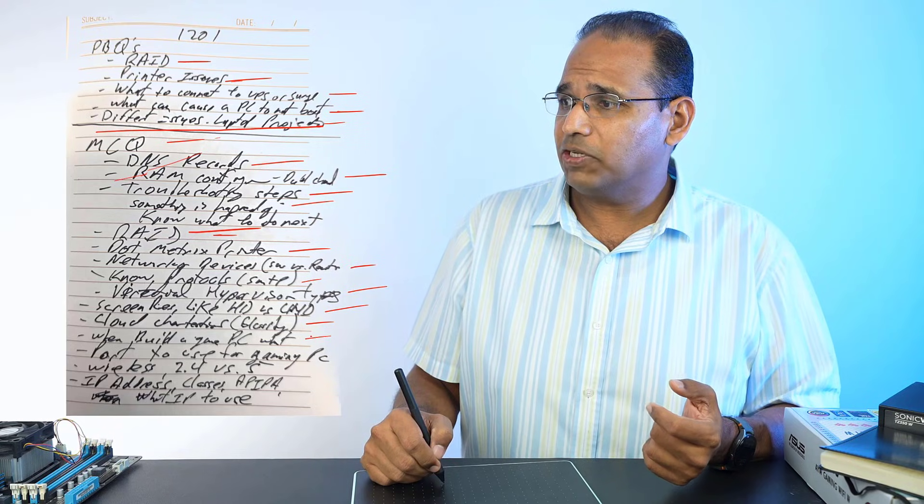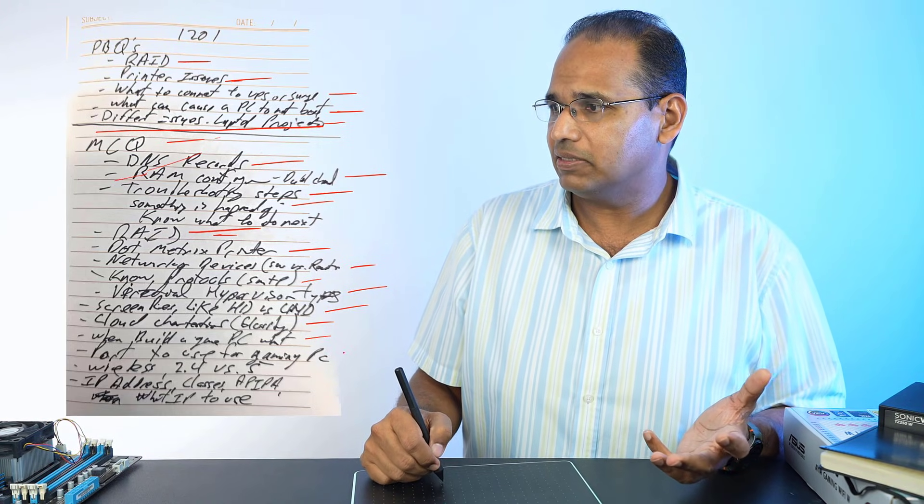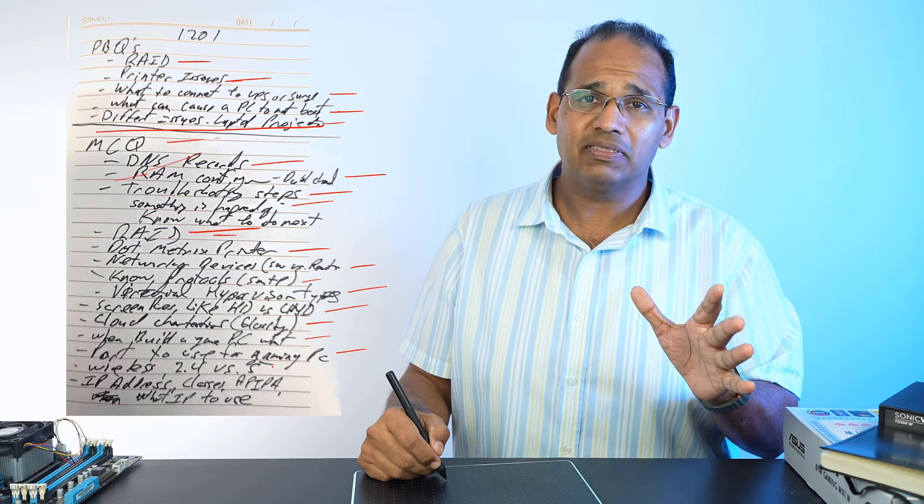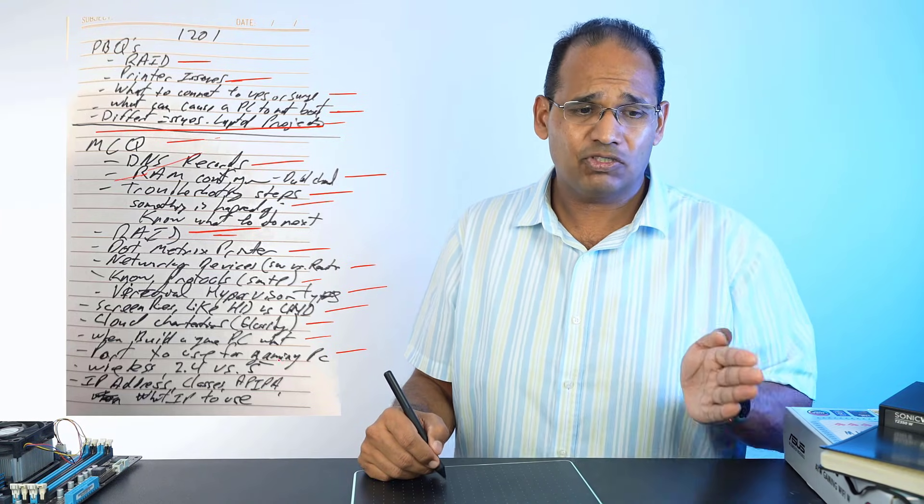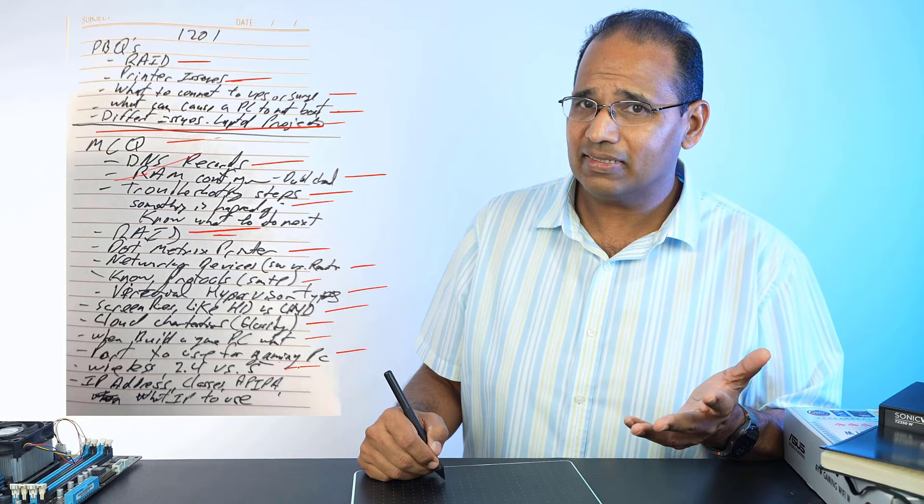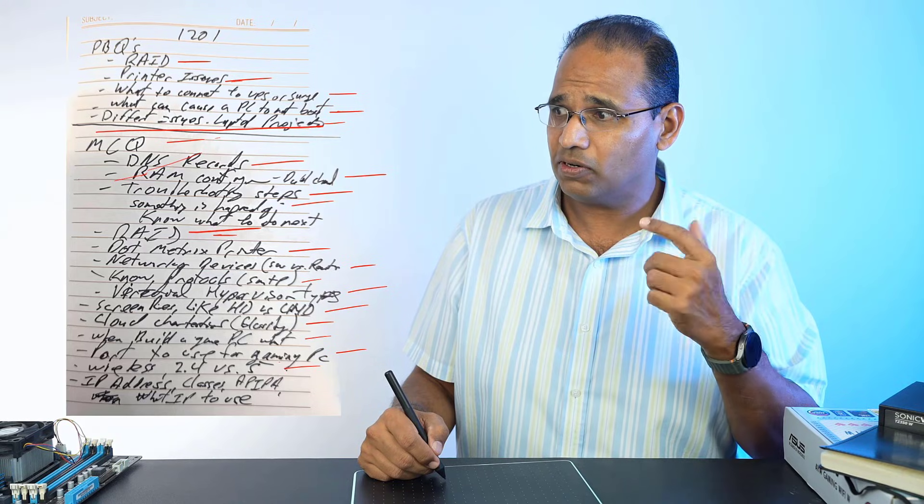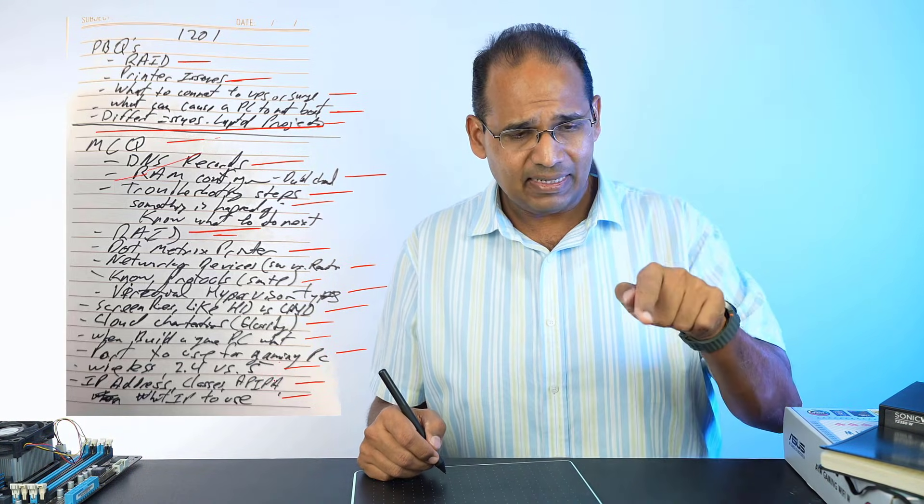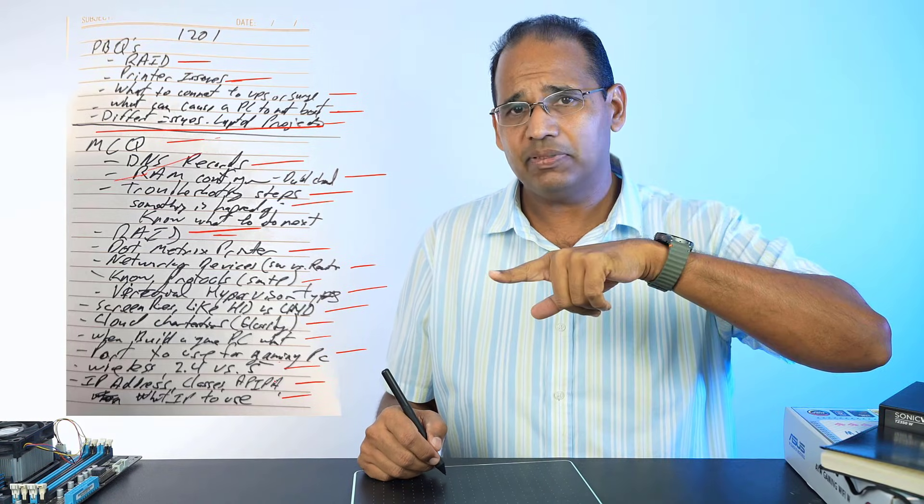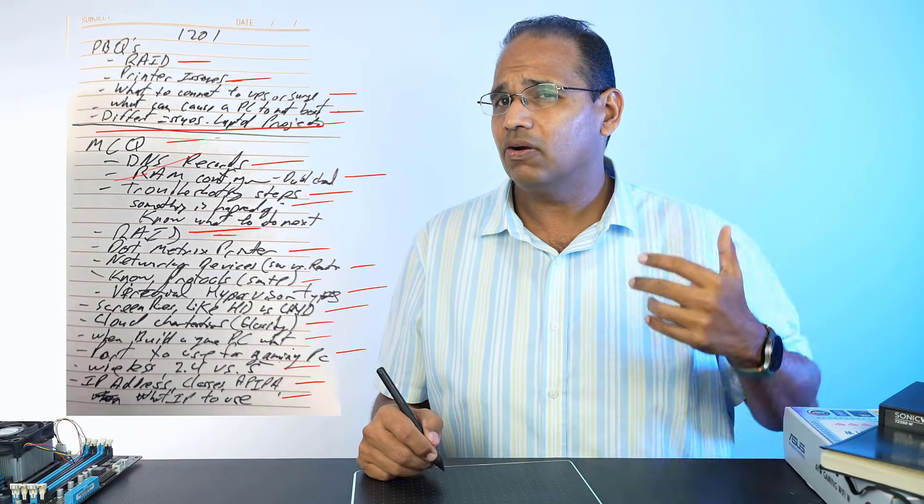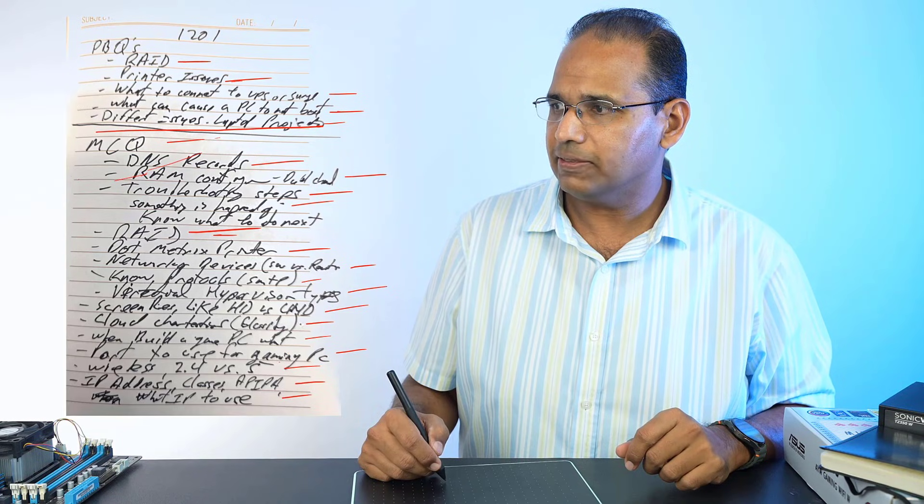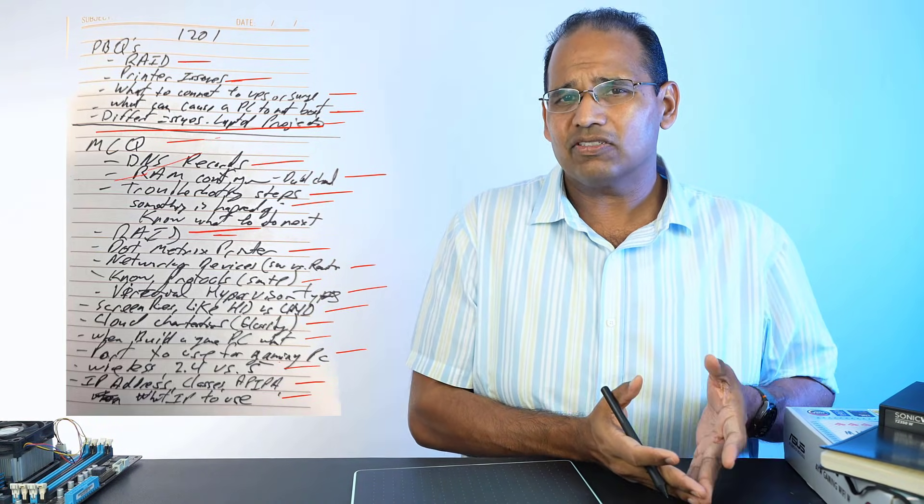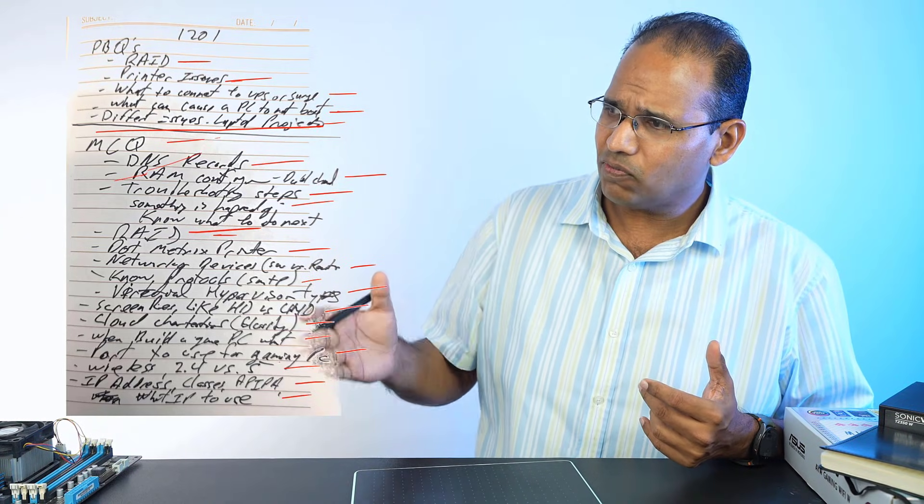Know when to use solid state drives versus normal hard drives - SSDs are faster. Cloud computing characteristics like elasticity. When building a gaming PC, use an SSD, know what type of graphics card. Wireless networking - pros and cons of 2.4 versus 5 gigahertz. IP addressing - if they give you an IP address you need to know if devices can communicate. Understand your different classes A, B, C. APIPA address was also on there. That's the 1201. Was it hard? No, it requires some memorization and understanding technology, but overall a pretty easy exam.